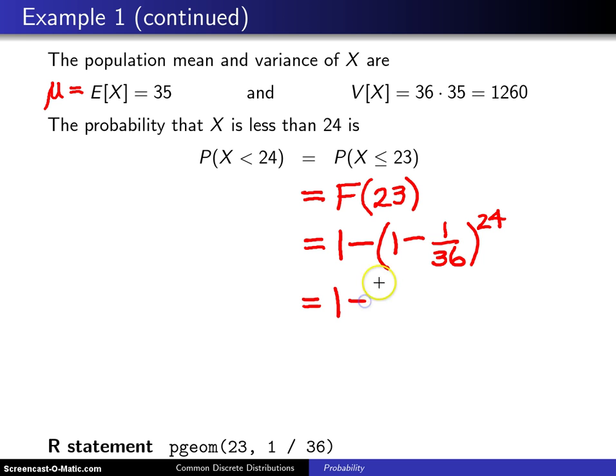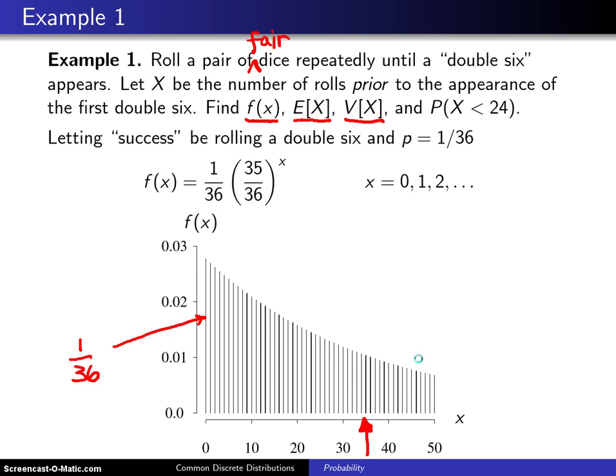So this is 1 minus (35/36) raised to the 24th power. And when you work that out, at least to 4 digits, that turns out to be 0.4914. So going back to the previous page, that 0.4914 will correspond to the spikes associated with 0 through 23.